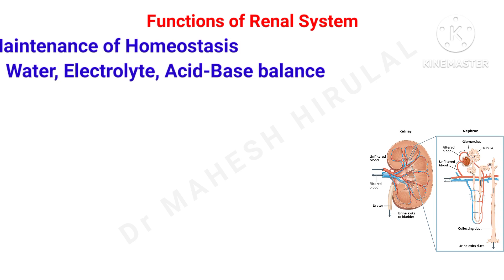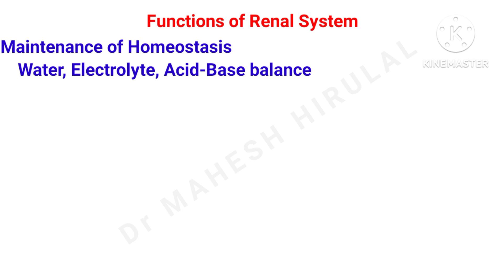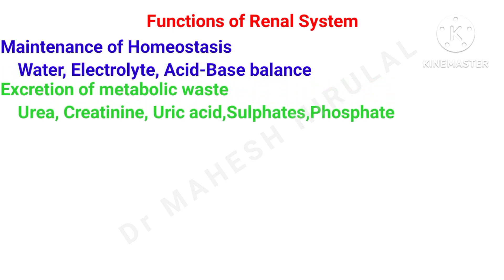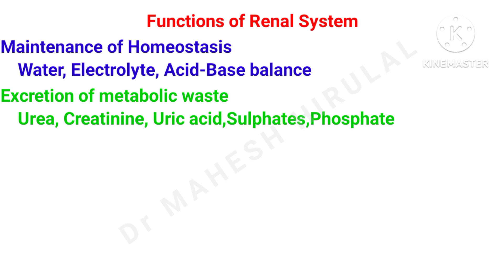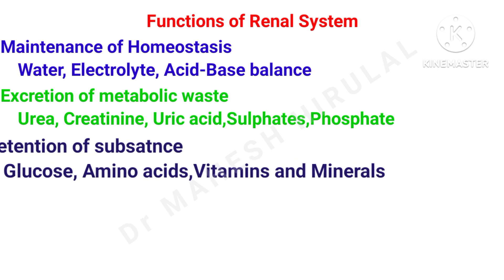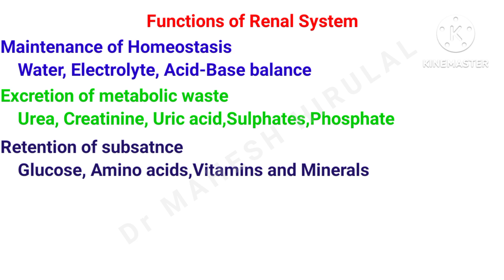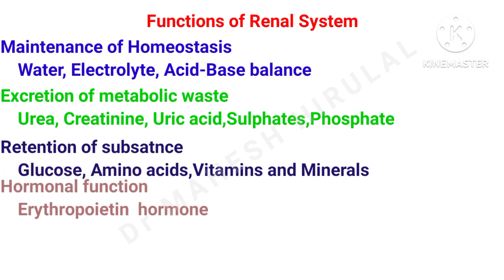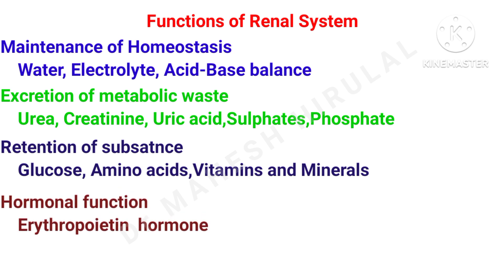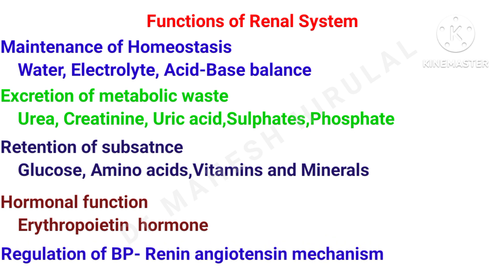It plays a role in maintenance of homeostasis. It will maintain water, electrolyte and acid-base balance. The renal system excretes metabolic waste like urea, creatinine, uric acid, sulfates and phosphates. It will also retain vital substances like glucose, amino acids, vitamins and minerals. The renal system also has a hormonal function like the production of erythropoietin hormone, which stimulates the production of red blood cells, and plays a major role in the renin-angiotensin mechanism which regulates blood pressure.